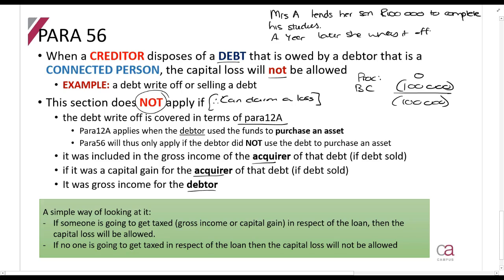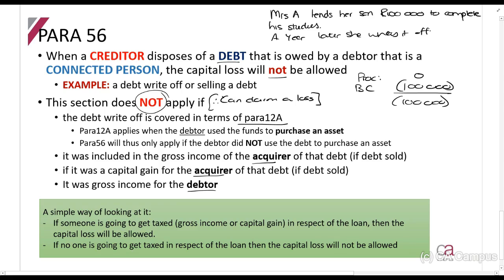In the studies example, what did the son get? The son received a capital amount — he basically made money on this. But it will not be gross income because he's not trading in it, and it will also not be a capital gain for him, because there's no disposal of an asset — he simply had a debt written off. So the son won't be taxed in this case. Because the son won't be taxed on that 100,000 rands, the loss will not be allowed as a claim for Mrs. A.